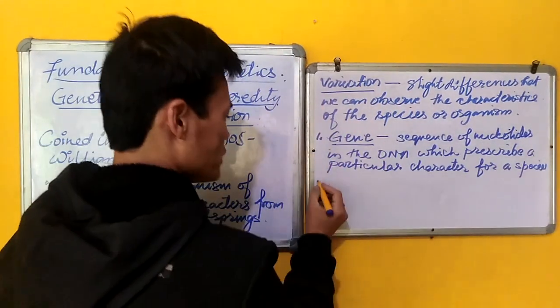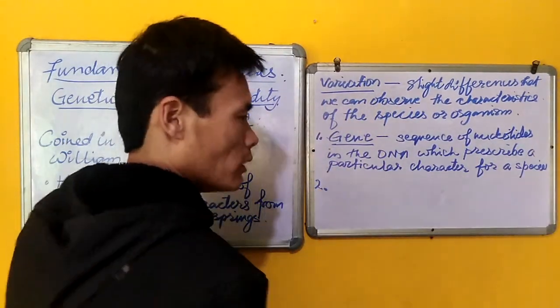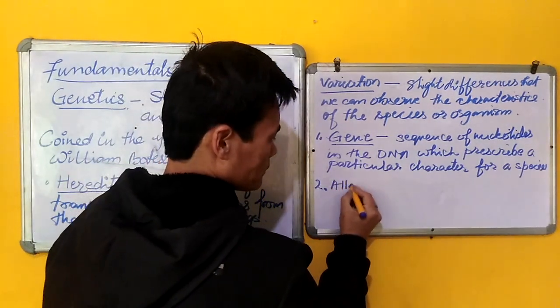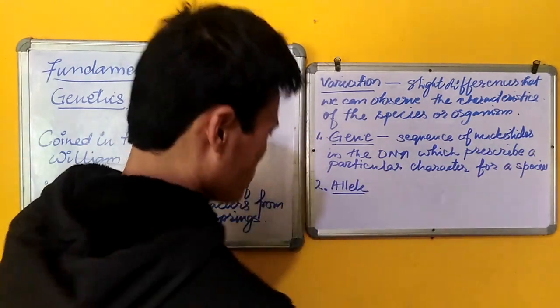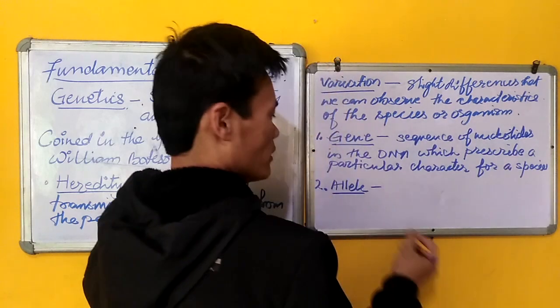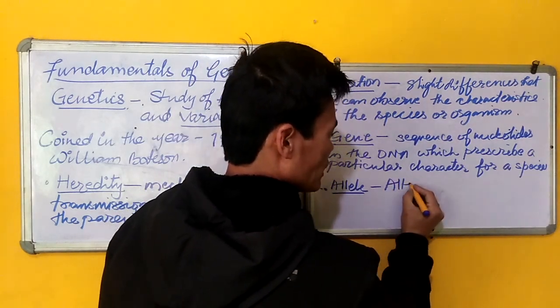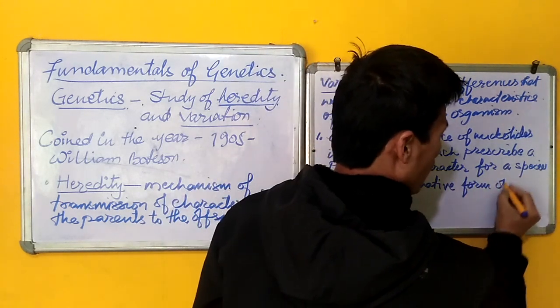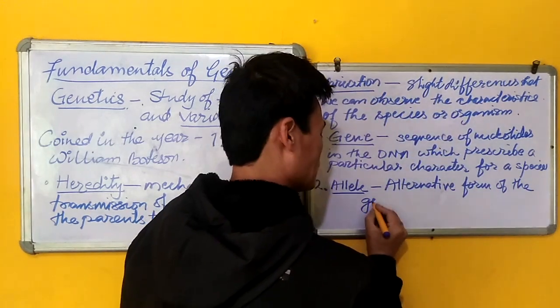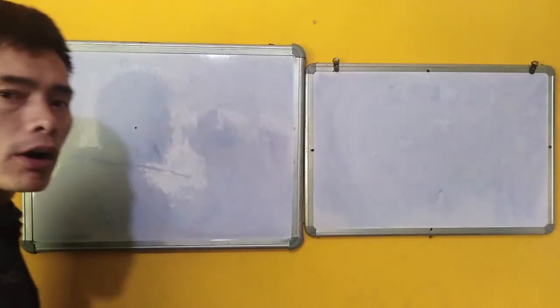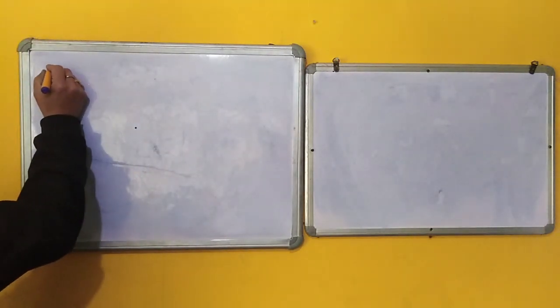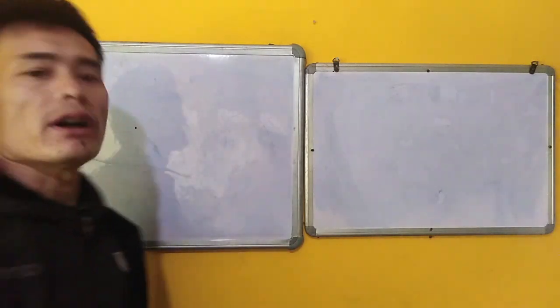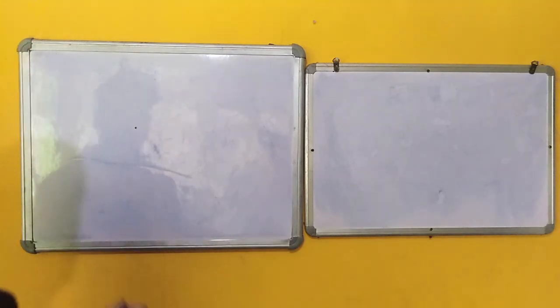Likewise, the next important terminology that we need to understand is the allele. Coming to this term, allele refers to the alternative form of the gene. What I mean by the alternative form of a gene is a gene that prescribes a particular character have two or more alternative forms for that character.